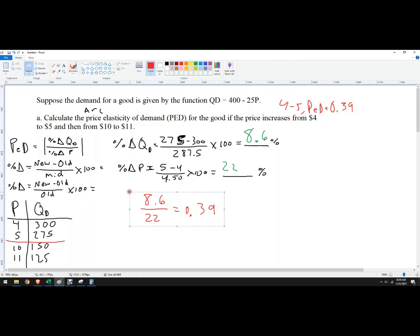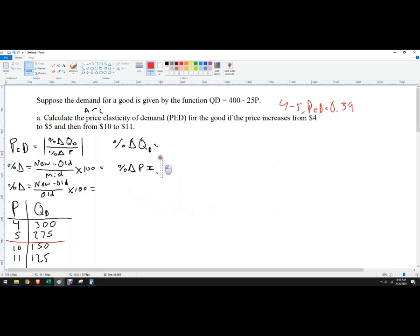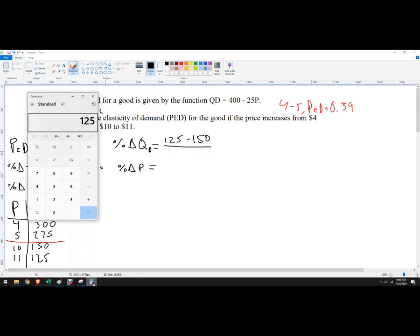Now we've got to do the second one. Now I'm just going to use different numbers. We're going from, we're increasing the price up to 11. So we've got 125 minus 150 divided by, this one I didn't do ahead of time, so 125 plus 150 and then multiply it by a half. It's 137.5, that's what I thought, but you always want to make sure.